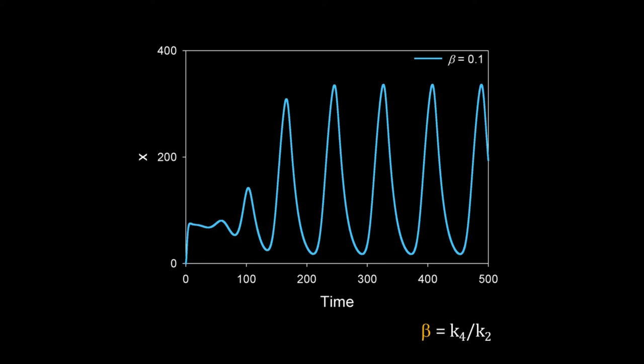k4 is the rate constant for degradation of protein, k2 is the same for mRNA. I define β as k4/k2, so β is the ratio of average lifetime of mRNA to the average lifetime of protein. In my simulation, β = 0.1, so proteins are more stable than mRNAs and we have oscillation.